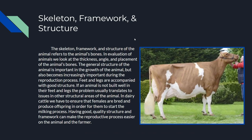Moving on to skeleton framework and structure — this covers the rest of the cow, like the ribs. The skeleton framework and structure refers to the animal's bones. In evaluation, we look at the thickness, angle, and placement of all these bones. The general structure is important in the growth of the animal, and becomes increasingly important during the reproduction process. If an animal is not built well in their feet and legs, the problem usually translates to other structural issues throughout the animal. In dairy cattle, females must be bred and produce offspring in order to start the milking process, so good quality structure and framework can make the reproductive process easier on both the animal and the farmer.